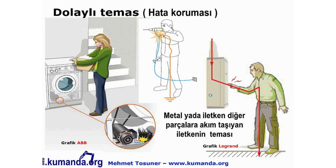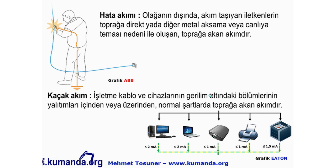Dolaylı temas — hata koruması — ise metal ya da iletken diğer parçalara akım taşıyan iletkenin temas şeklindedir. Örneğin bir pano içerisinde akım taşıyan iletkenin pano gövdesine dokunması ya da bir elektrikli cihazın içerisindeki iletkenin cihazın metal gövdesine teması şeklinde olabilir. Hata akımı: olağan dışı bir arıza üzerinden toprağa akan akımdır; olağandışı bir durumdur.